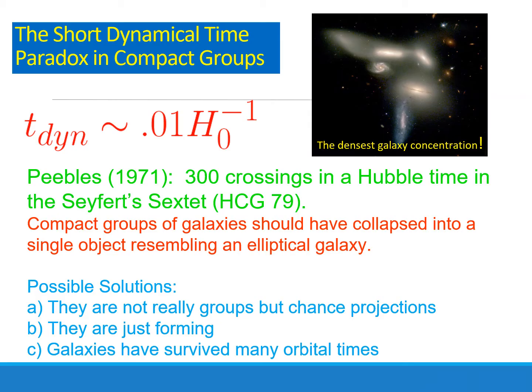There has been a problem regarding the dynamical time in compact groups. A simple calculation shows the dynamical time is about one hundredth of a Hubble time. For the densest galaxy concentration — known as Seyfert's Sextet or Hickson Compact Group 79 — people calculated that there should have been at least 300 crossings within a Hubble time. From this, people inferred that compact groups should have already collapsed into an elliptical galaxy remnant.